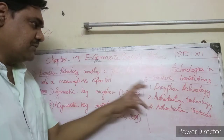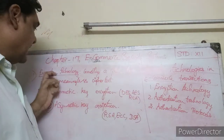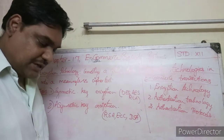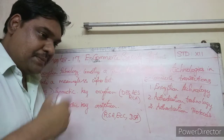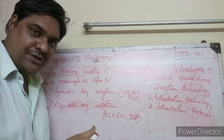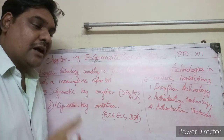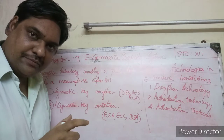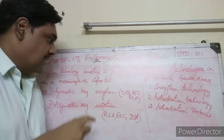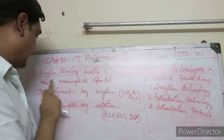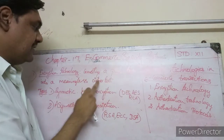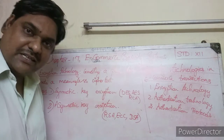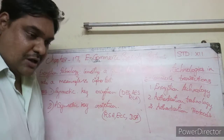The first one is encryption technology. Converting a plain text into a meaningless cipher text is called encryption.